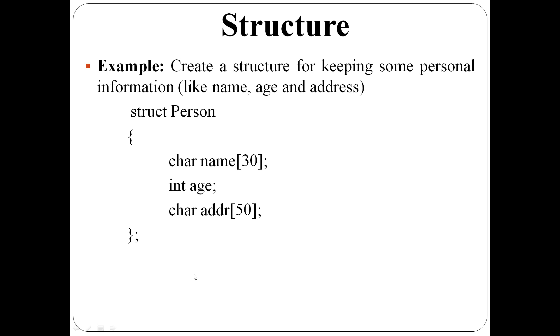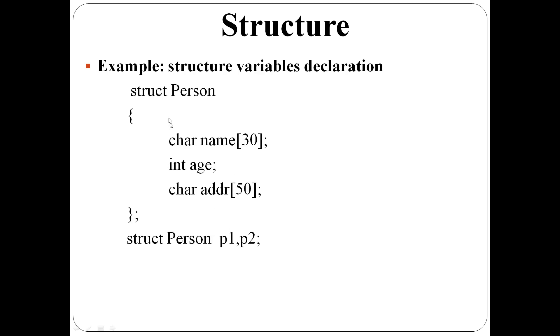Next step is structure variable declaration. Different ways to declare structure variables. First way: structure definition, then next line struct, structure name, followed by variables. Here, p1, p2 are the two structure variables. Person is the structure name. This can be declared outside or inside the main function.